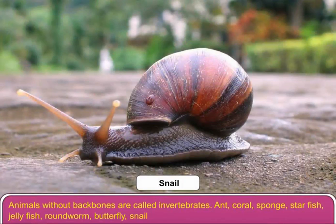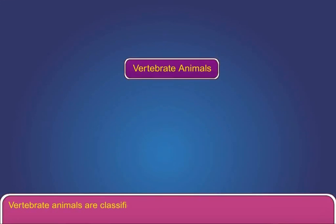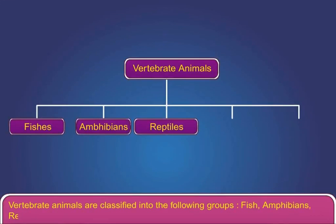Vertebrate animals are classified into the following groups: fish, amphibians, reptiles, birds, and mammals.